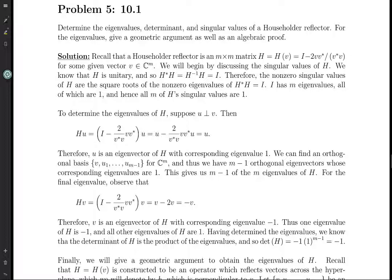so recall that a Householder reflector is just any M by M matrix of this form. So a Householder reflector comes from a vector V, and you just take the identity and you subtract two times V V star. So V V star is a matrix. And then you multiply it by the scalar 2 over V star V for some given vector V. And we're going to assume that V is non-zero.